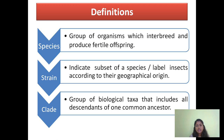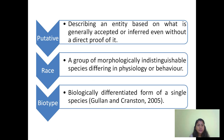Clade means it includes all the descendants of one common ancestor, and it will be represented in the phylogeny. Putative species are those which are generally accepted even without having proof. Race and biotypes are almost similar terms, but the race term was used first and was later replaced by the term biotype. These are biologically differentiated forms of a single species, differing in terms of physiology or host plant range.